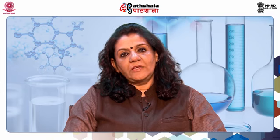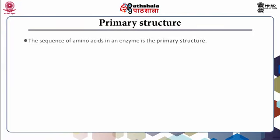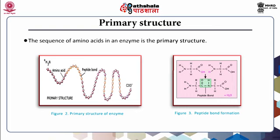In the next few slides, we will look at each of the enzyme structures in detail. The sequence of amino acids in an enzyme is the primary structure, as shown in figure 2. In the primary structure, the constituent amino acids are linked by peptide bonds as shown in figure 3. The peptide bond is formed between the amino group of one amino acid and the carboxyl group of another, along with the release of a water molecule. The primary structure dictates the three-dimensional structure of the protein. The different ways in which amino acids are arranged in a chain will influence proper protein folding of the enzyme to be functionally active.